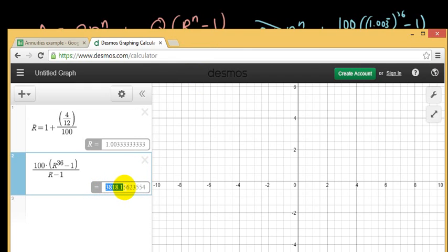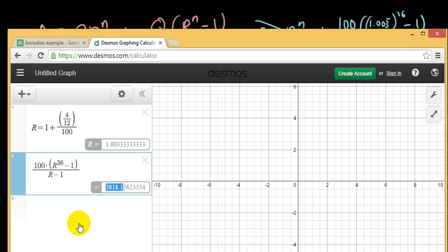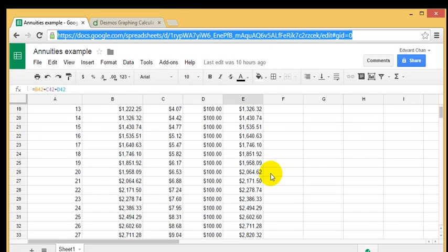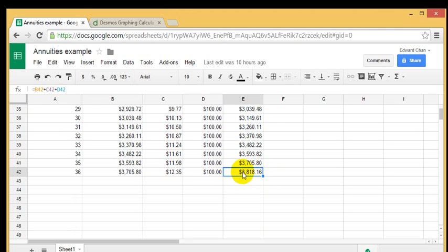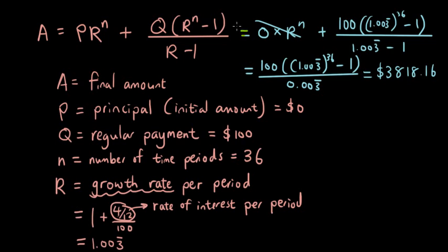3,818.16. 3,818.16, 3,818.16, which is exactly the same as what I had in my annuities example, 3,818.16. So this shows you that the formula works. You don't need an Excel spreadsheet.